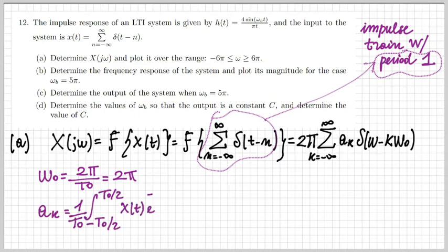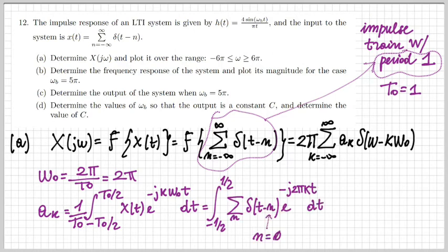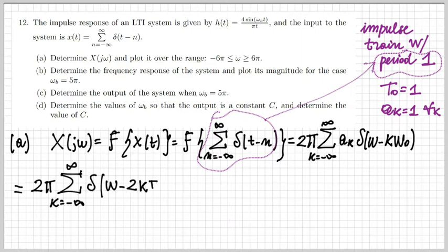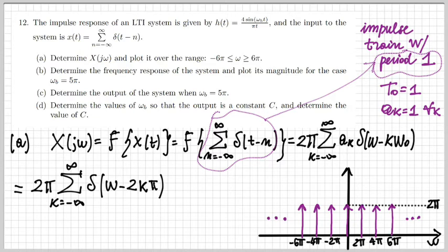Calculating the aₖ's with T₀ equal to one, I obtain the integral of an infinite series of impulses. Because I integrate within one period — between minus one half and one half — only one of them survives. All the other deltas fall outside of the integration interval; the only one that survives is the one for n equals zero, centered at the origin. This integral simplifies to one by applying the sampling property of the delta. So the coefficients aₖ are one for every single k.